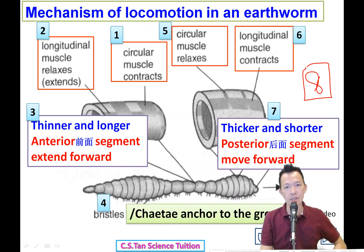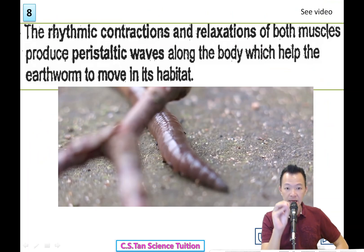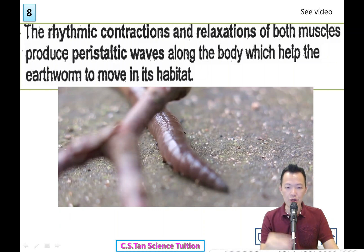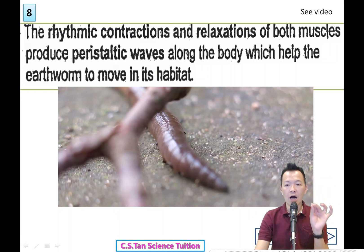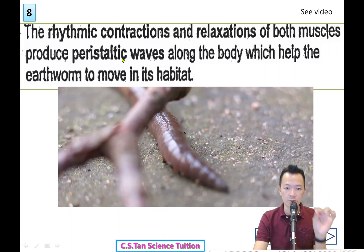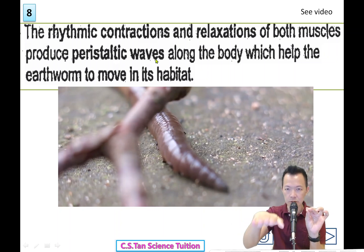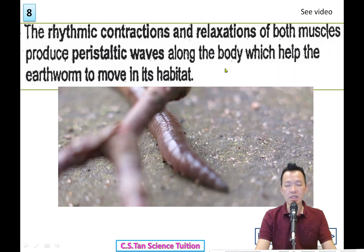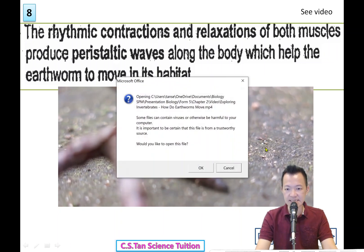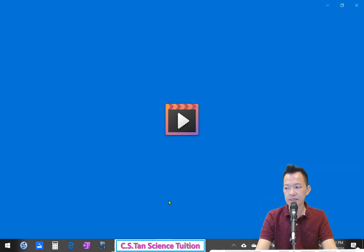The rhythmic contraction and relaxation of both muscles produces a peristaltic wave, and this peristaltic movement helps the earthworm to move through its habitat. Now let's watch a video to see this in action.